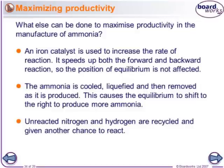There's something else you can do to improve profitability: you can use a catalyst. A catalyst doesn't change where the equilibrium is — it just helps it get there quicker, because it provides an alternative route with a lower activation energy. Adding an iron catalyst will speed up the rate of reaction — it speeds the forward reaction up but also speeds the reverse reaction up, so it doesn't affect the equilibrium position but allows you to make more product more quickly.